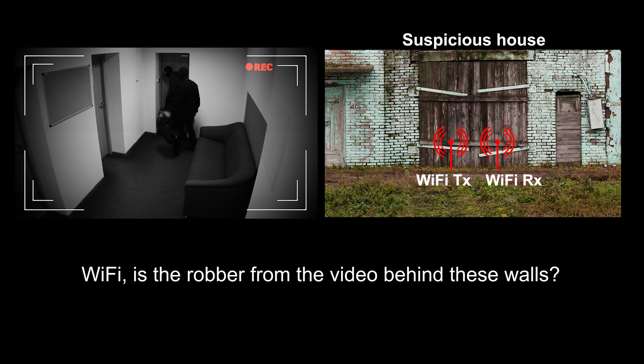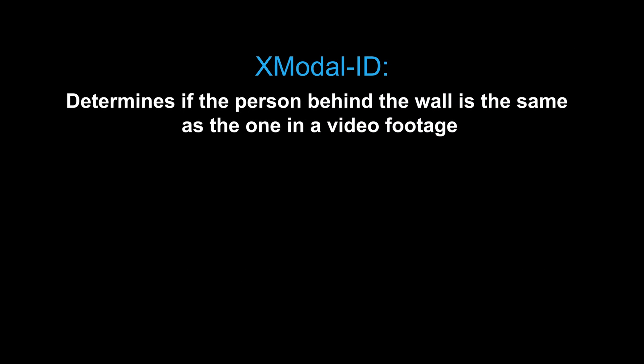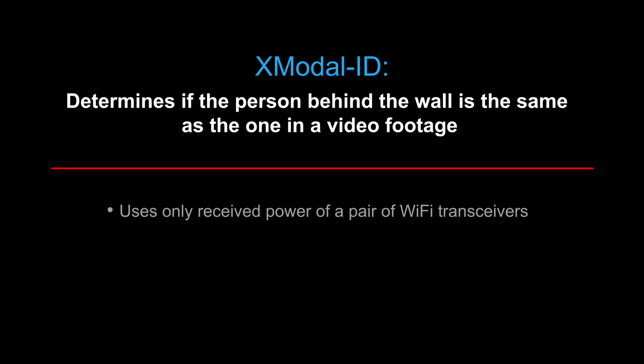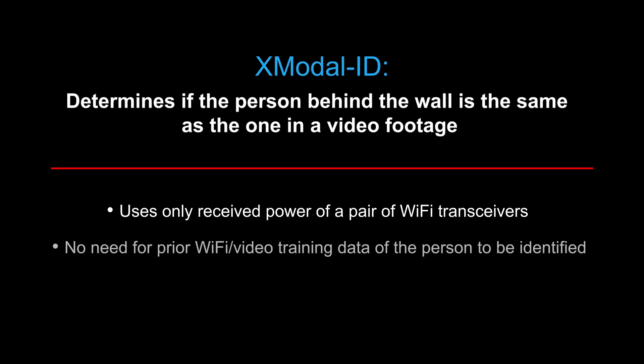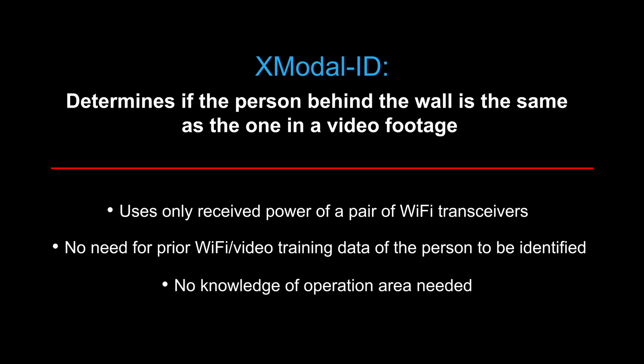More specifically, we propose Cross Modal ID. This new technique can determine if the person behind the wall is the same as the one in a video footage. Cross Modal ID only uses the received power measurements of a pair of Wi-Fi transceivers. It does not need any prior Wi-Fi or video measurement of the person to be identified, and it also does not need any prior knowledge of the operation area.